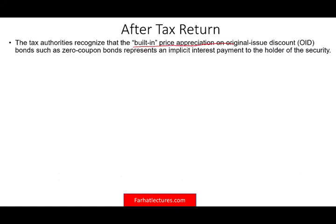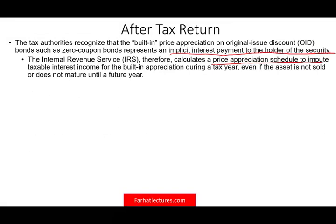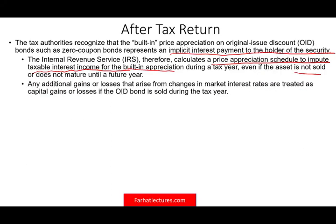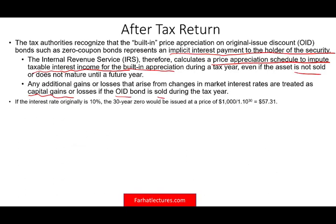The tax authorities consider the built-in price appreciation of OID bonds to represent an implicit interest payment to the holder of the security, and that implicit interest payment is taxable. The IRS calculates a price appreciation schedule to impute taxable interest income for the built-in appreciation during the tax year, even if the asset is not sold or does not mature. So you're not getting any money, you're not selling it — regardless, you still have to pay taxes.